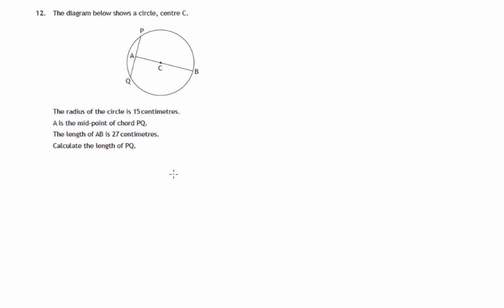Various lengths are given to us. The first thing we should notice is that since A is the midpoint of PQ and AC extended is the line through the centre, we know that's an axis of symmetry and therefore that's a right angle.